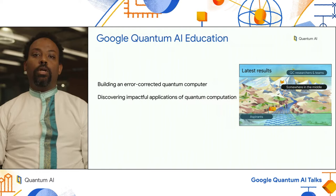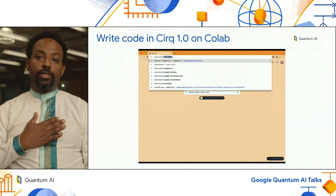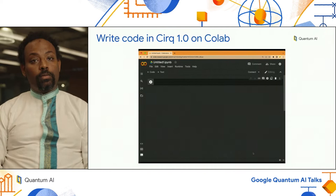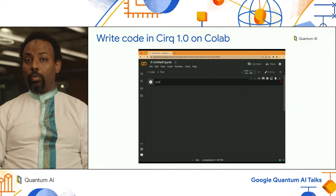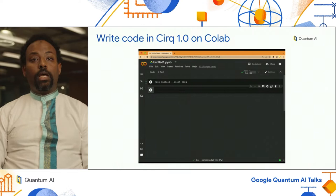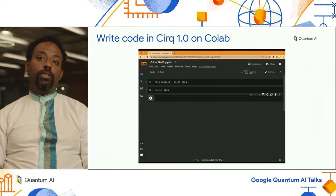Let me emphasize how easy it is to get started writing code in Cirq 1.0. The way I like to write code in Cirq is using the CoLab interface — you can just go to colab.research.google.com and you're greeted with a very nice interface that allows you to write code in Python immediately. CoLab is very popular in the general machine learning community and the quantum computing community can also benefit from it. I've opened an instance of CoLab, installed Cirq with a simple line, and can quickly import Cirq and start writing code.